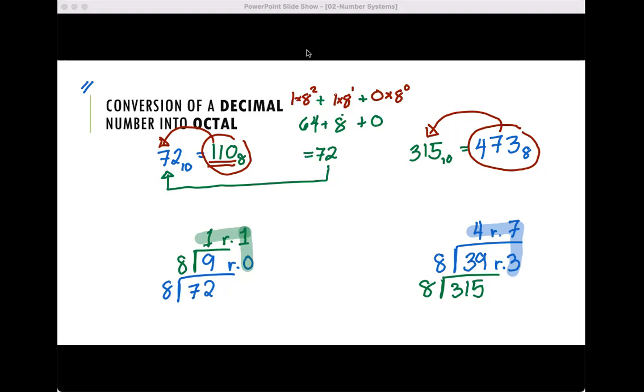Same goes with this one: 473. Let's convert that back to 315. So we have 4, 7, and 3. Multiply that by 8 raised to 0, multiply this by 8 raised to 1, and multiply it by 8 raised to 2. And then let's add it.